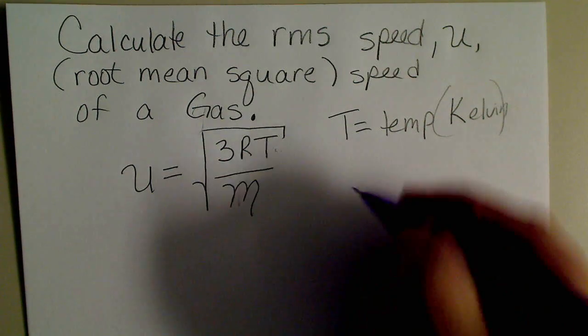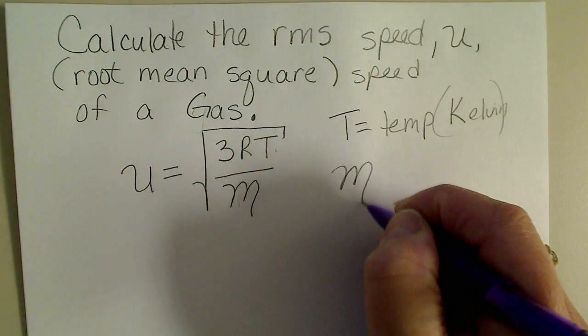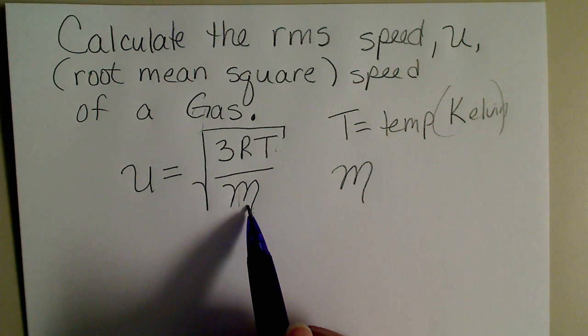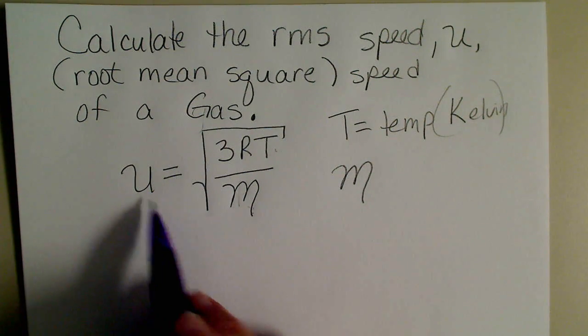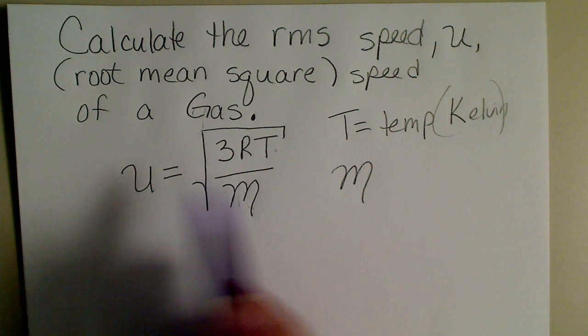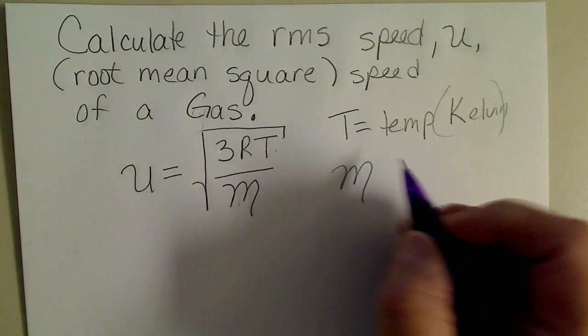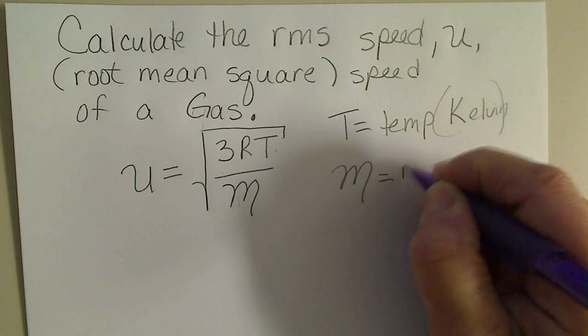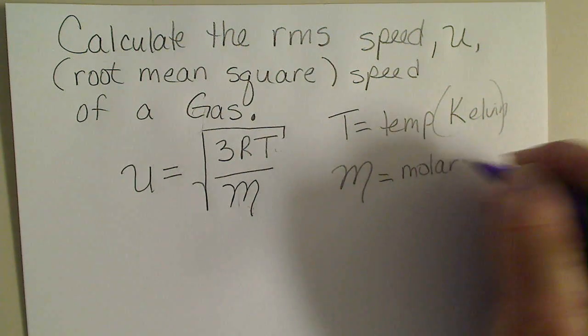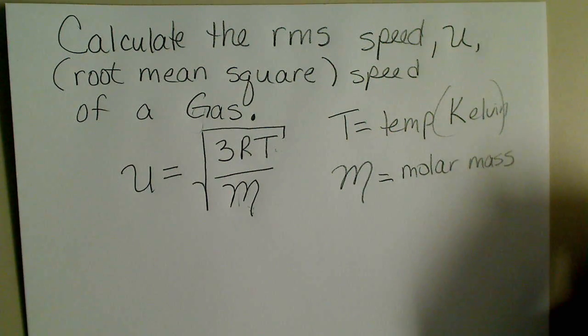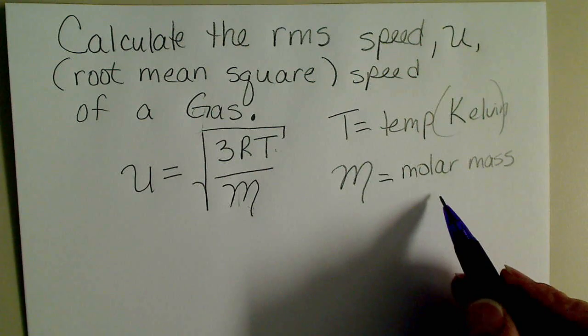The cursive M is the molar mass. So the heavier a gas is, or in other words, the bigger the number in the denominator, the smaller the answer is going to be. So the heavier a gas is, the slower its speed is going to be.